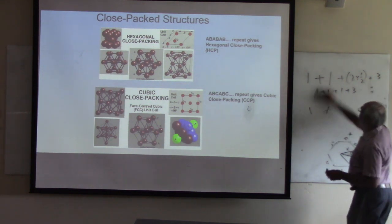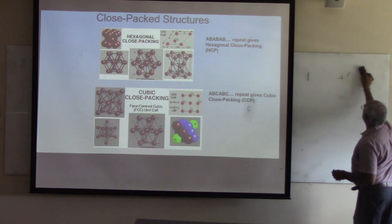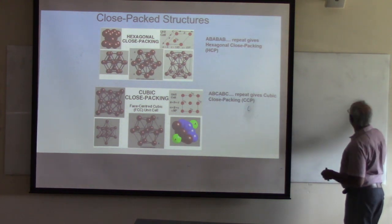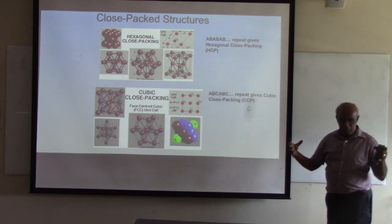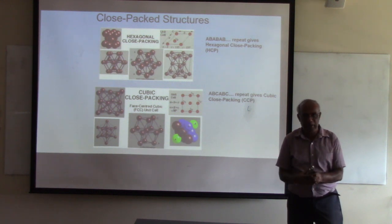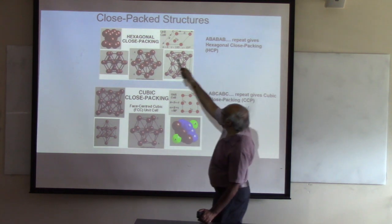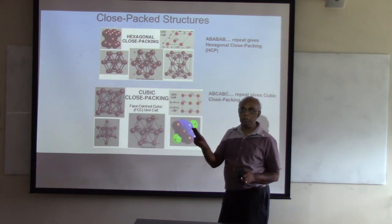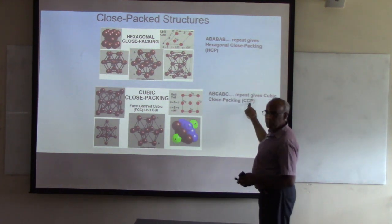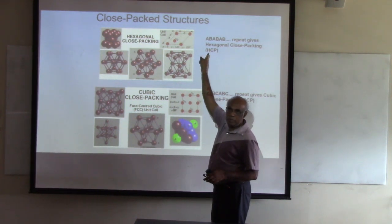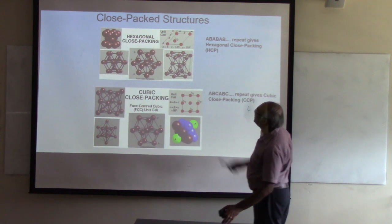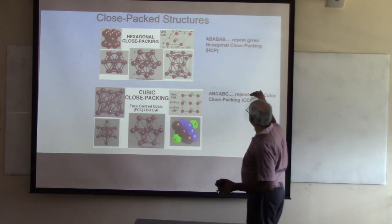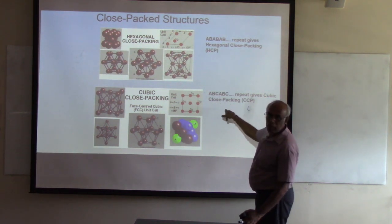Next we are going to talk about close-packed structures. The simple cubic, FCC, and BCC structures do not have the highest packing fraction. There are two structures we call close-packed: cubic close-packed (CCP) and hexagonal close-packed (HCP). These two differ in how layers are stacked.